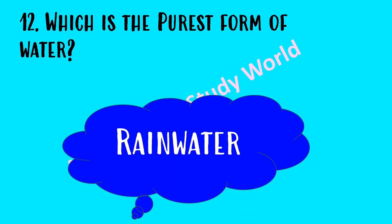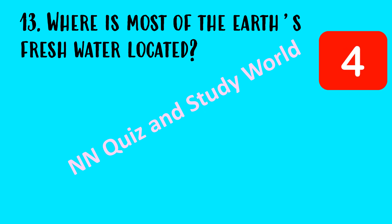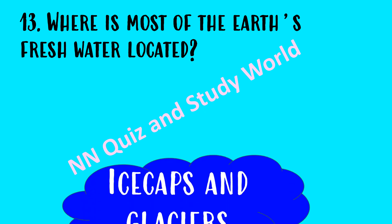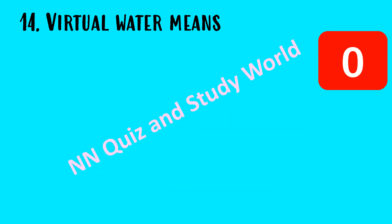Which is the purest form of water? The answer is rainwater. Where is most of the Earth's freshwater located? The answer is ice caps and glaciers.